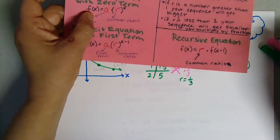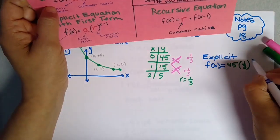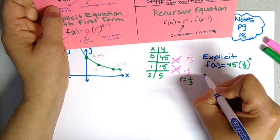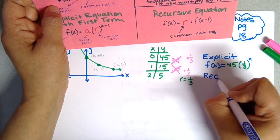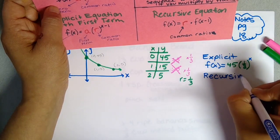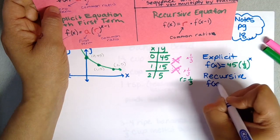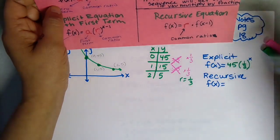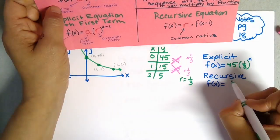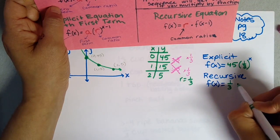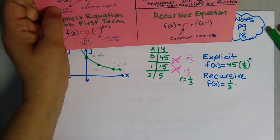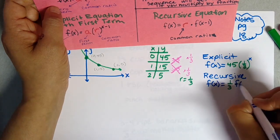Recursive is easier. For the recursive, f(x) equals your common ratio, 1/3, times the previous term, f(x-1).